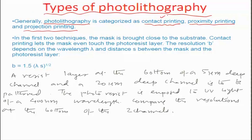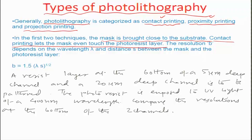In the first two techniques, namely contact and proximity printing, the mask is brought close to the substrate. In the proximity case there is a small gap between the wafer and the mask, and in contact printing the mask can even touch the photoresist layer, which is actually detrimental sometimes for the resist layer. The resolution B typically depends on the wavelength of the illumination source as well as the distance of the source from the particular layer of resist which needs to be exposed.